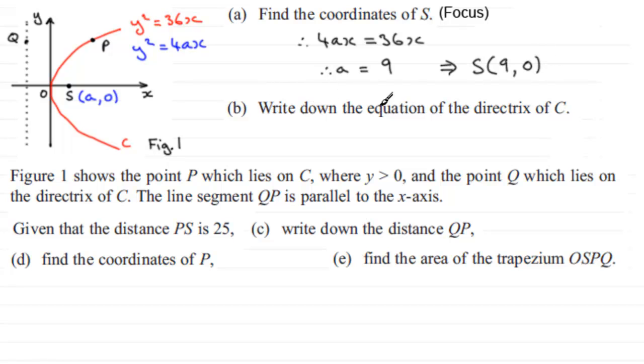Now, in part b, we've got to write down the equation of the directrix C. Now, the directrix is this line down here, this dotted line. And again, we should be familiar with the fact that this directrix, this dotted line here, has an equation x = -a.